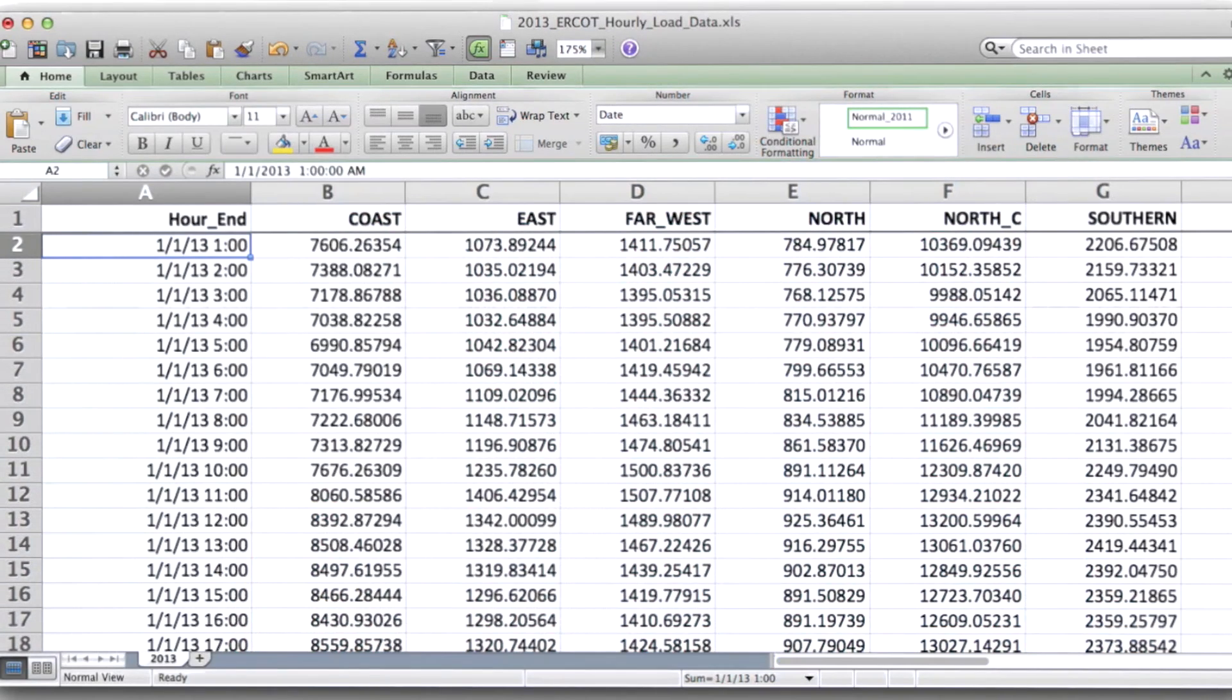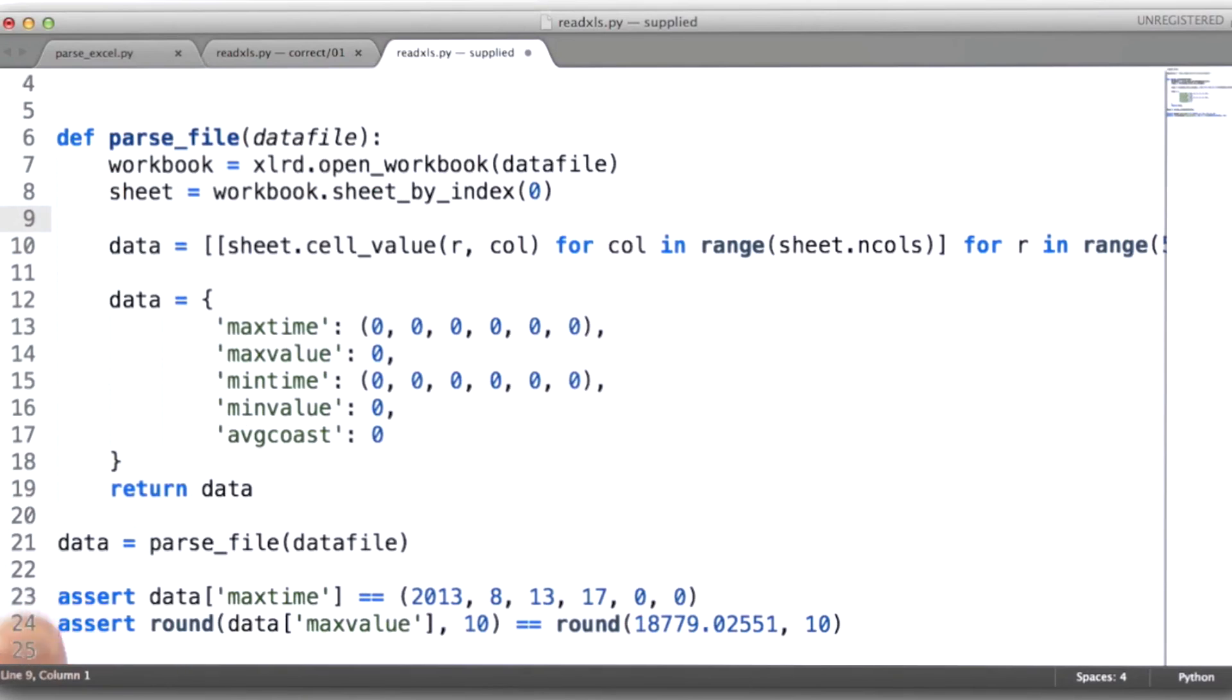Let's quickly take a look at the code provided. What I'd like you to look at first are the assertions down here at the bottom. This gives you an idea for the type of values you need to produce.